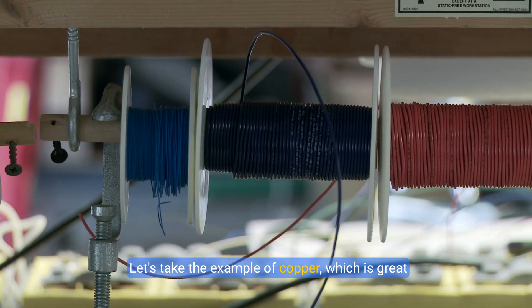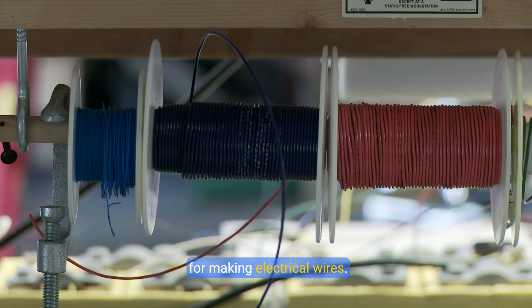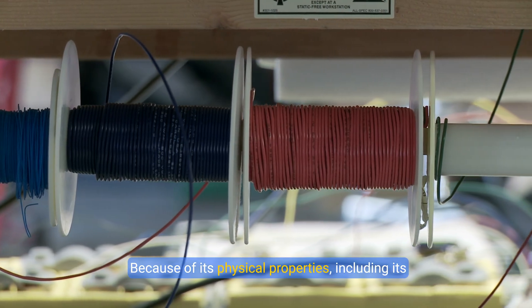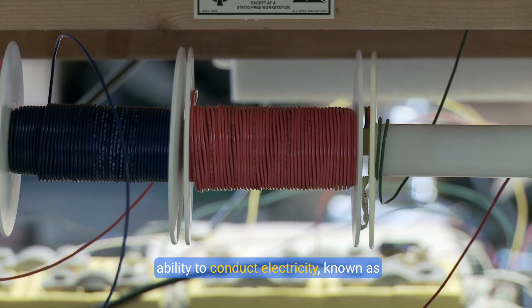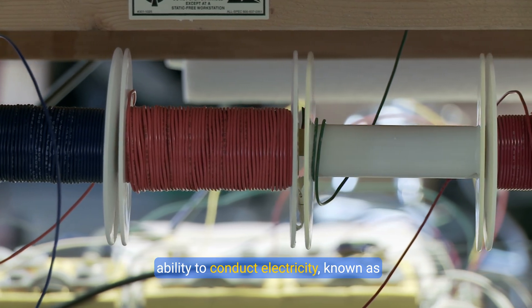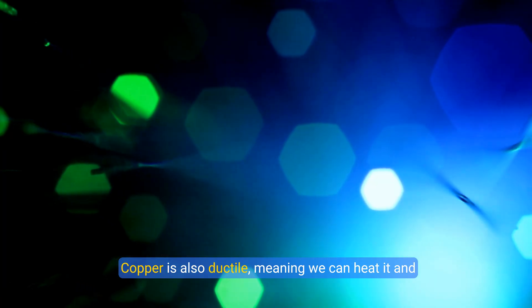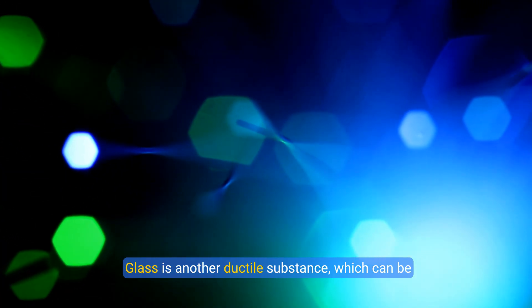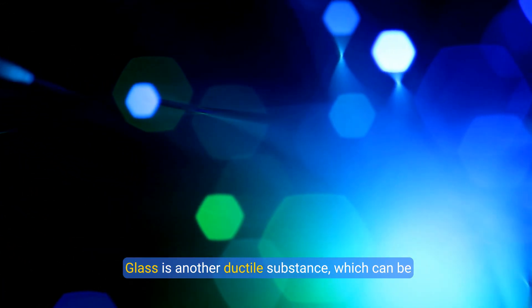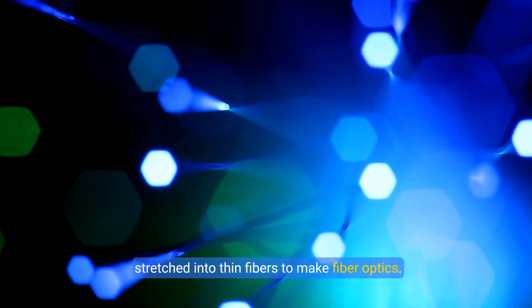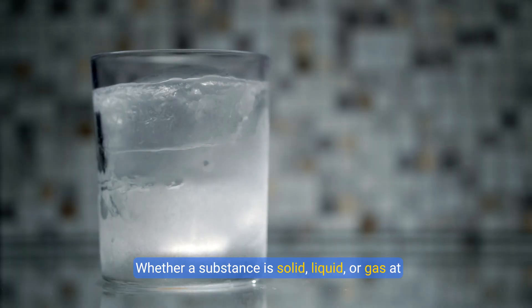Let's take the example of copper, which is great for making electrical wires. Why? Because of its physical properties, including its ability to conduct electricity, known as conductivity. Copper is also ductile, meaning we can heat it and pull it into thin wires. Glass is another ductile substance which can be stretched into thin fibers to make fiber optics.